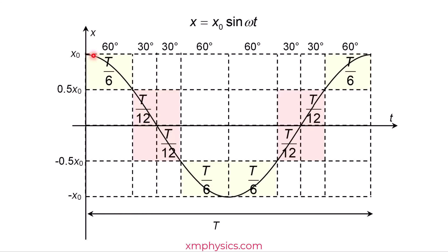So to go from the extreme to the half amplitude is one-sixth of a period. To go from the half amplitude to equilibrium is one-twelfth of a period. The intervals across the full cycle are: one-twelfth, one-sixth, one-sixth, one-twelfth, one-twelfth, and one-sixth. The answer is not one-eighth of a period because SHM is not constant speed motion. SHM has a very characteristic sinusoidal curve. That's all — ta-ta!